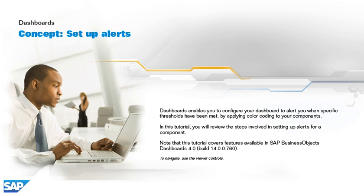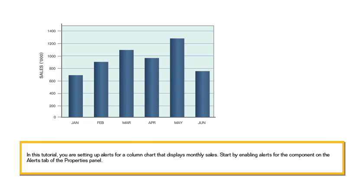To navigate, use the viewer controls. In this tutorial, you are setting up alerts for a column chart that displays monthly sales.